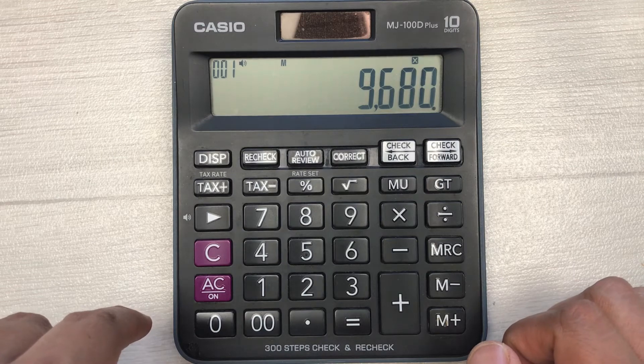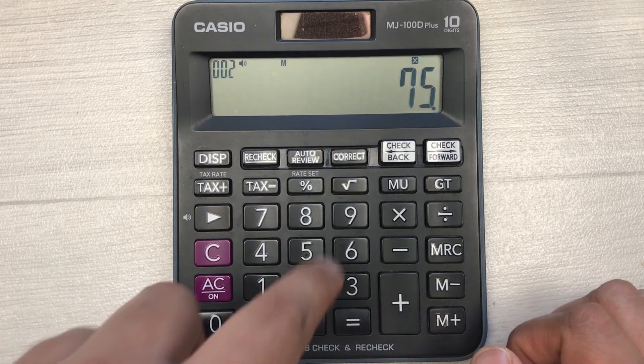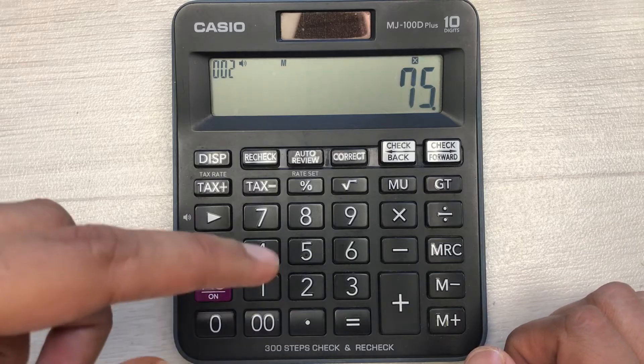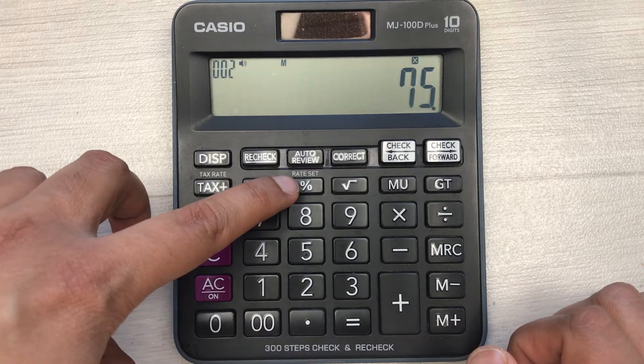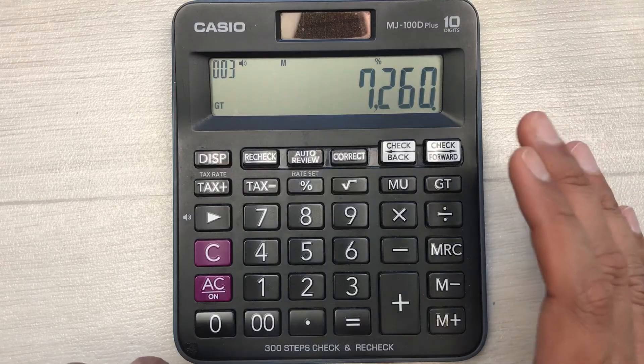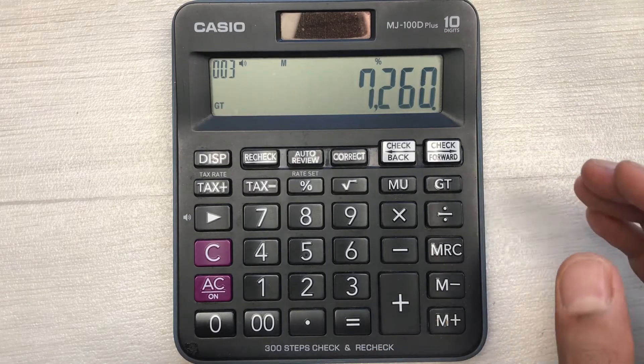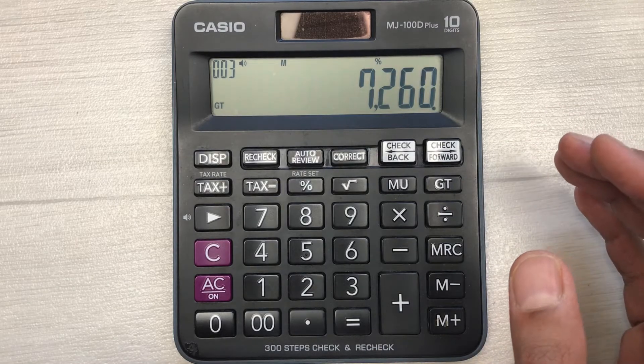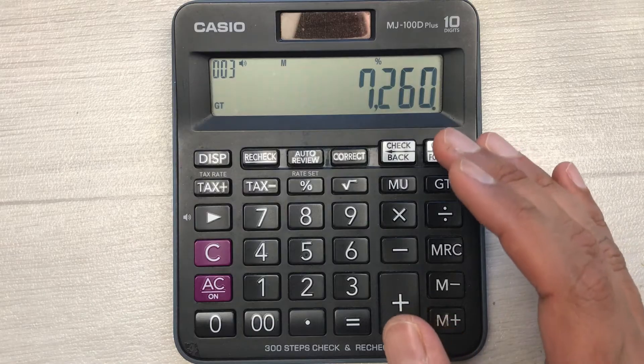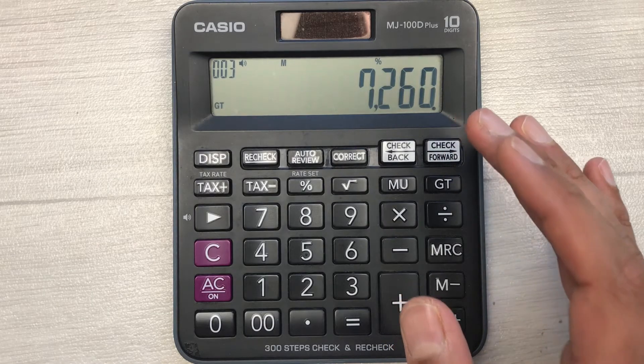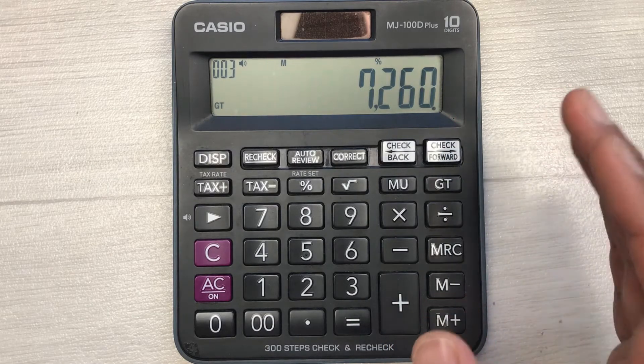And then you have to multiply it with 75. And in the last step you have to press this percentage button. So here is the final answer. After 25% discount the final amount will be 7260.